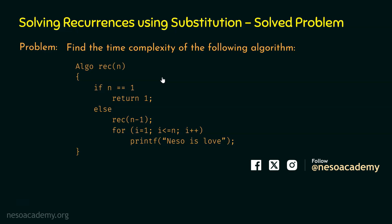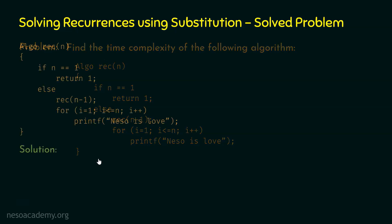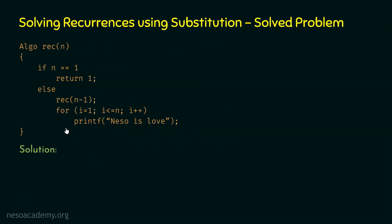We can represent the time complexity using one of the asymptotic notations. Let's try to write the recurrence relation of time of this algorithm first. Let's assume T(N) represents the time required to execute REC(N).